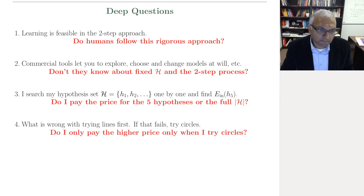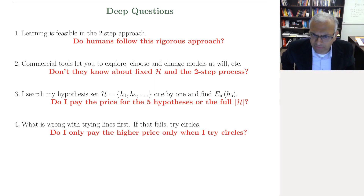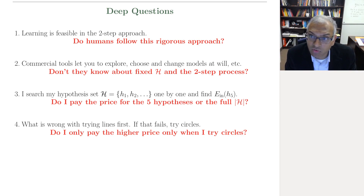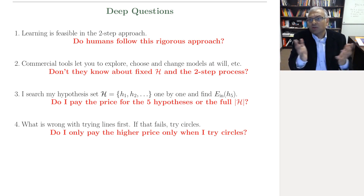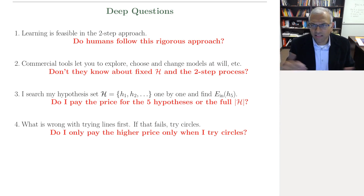Question 4: a typical thing in practice — I try a simple model like lines, it fails (doesn't get good in-sample error). Then I try a more complex model like circles. Succeed — bingo. I understand I've tried lines and circles, so I have to pay the price for both. But is there anything really wrong here? If I try circles, I'll pay the higher price. Why can't I change the hypothesis set if the first one fails?